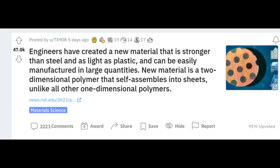However, in the new study, the researchers came up with a new polymerization process that allows them to generate a two-dimensional sheet called a polyaramide. For the monomer building blocks, they use a compound called melamine, which contains a ring of carbon and nitrogen atoms.